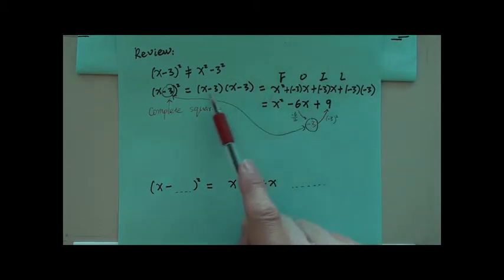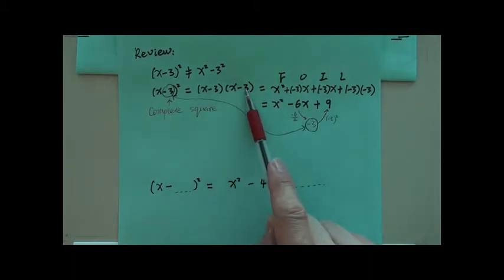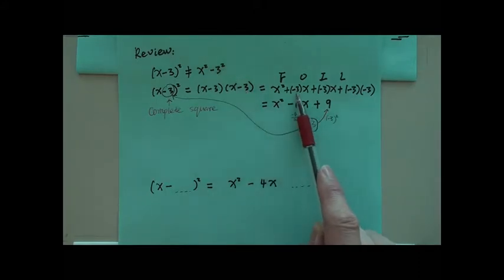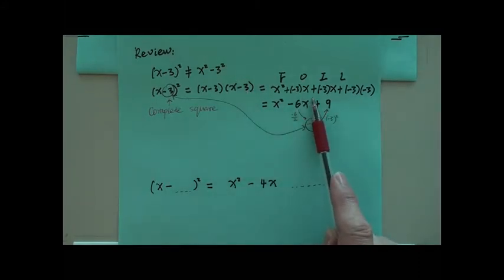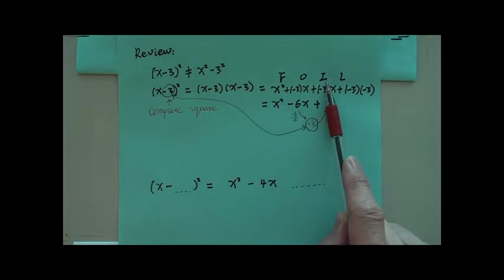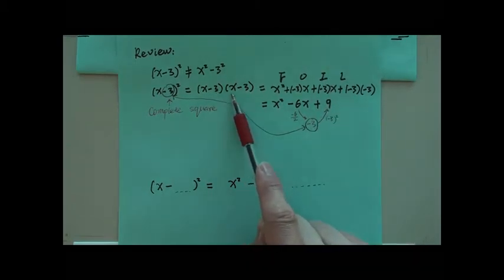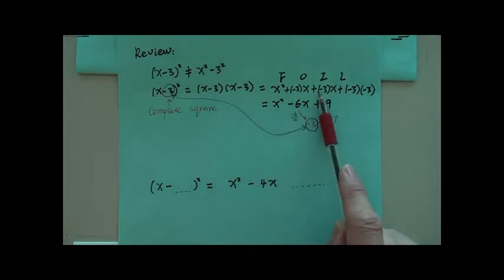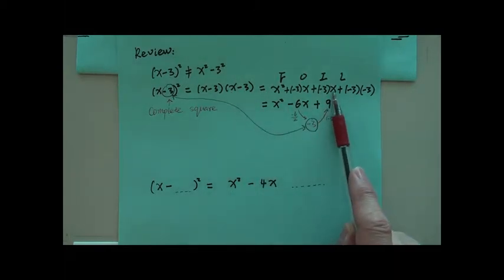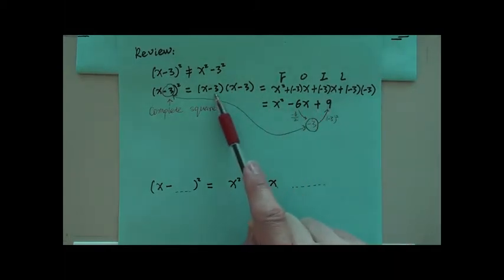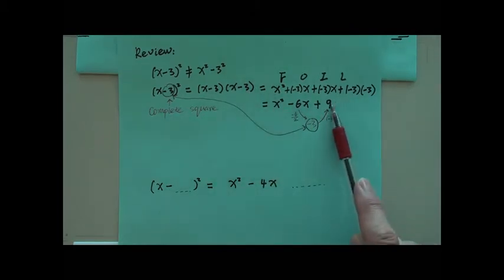And the outer product, x times negative 3, so it's negative 3x. And the inner product is negative 3 times x, so it's negative 3x. And the last product is negative 3 times negative 3, it gives you 9.